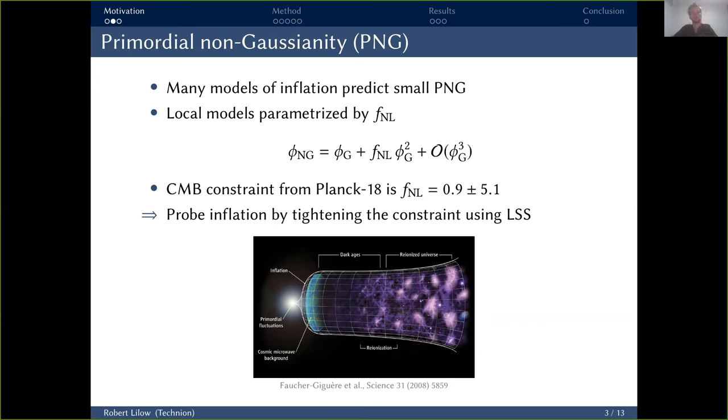However, many models of inflation actually predict a small but still potentially observable degree of non-Gaussianity. If we are able to constrain the degree of that non-Gaussianity, that will allow us to distinguish between different inflation models and thus probe the very early phases of the universe. The type of non-Gaussianity that we consider in this forecast is the local type, which means that the non-Gaussian primordial potential field phi_NG is just given by a local transformation of some underlying Gaussian field phi_G. And the way that is typically parametrized is by this non-linear coupling coefficient f_NL in front of the quadratic term for Taylor expansion.